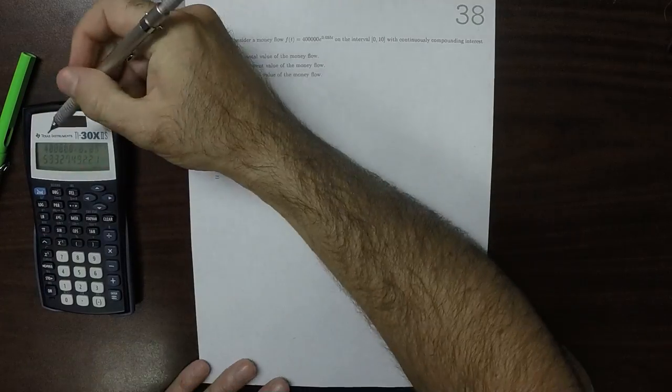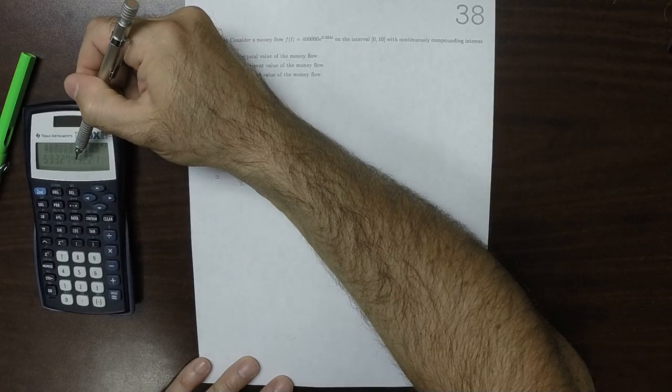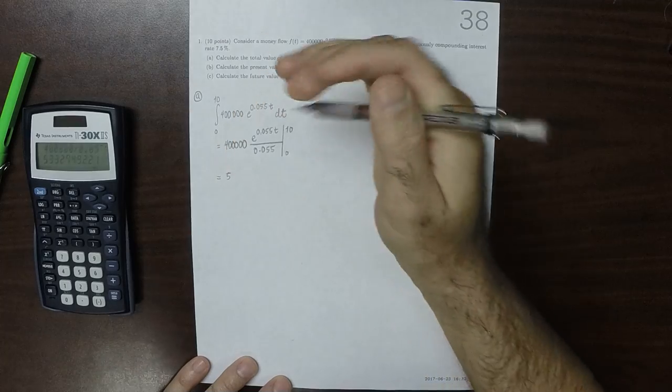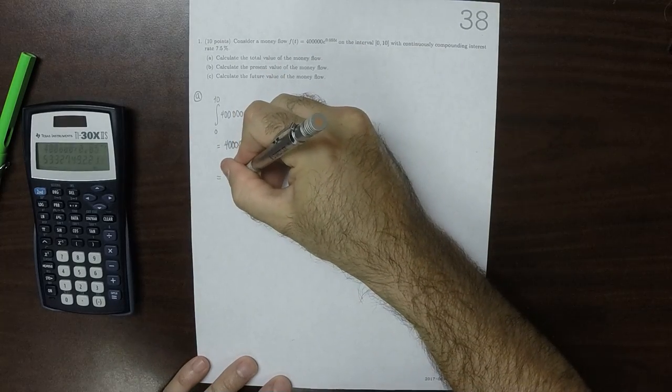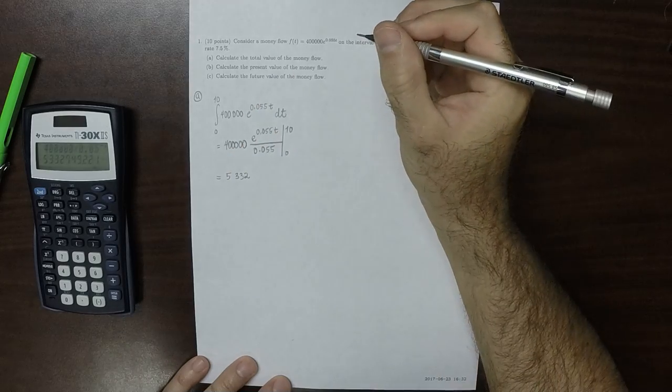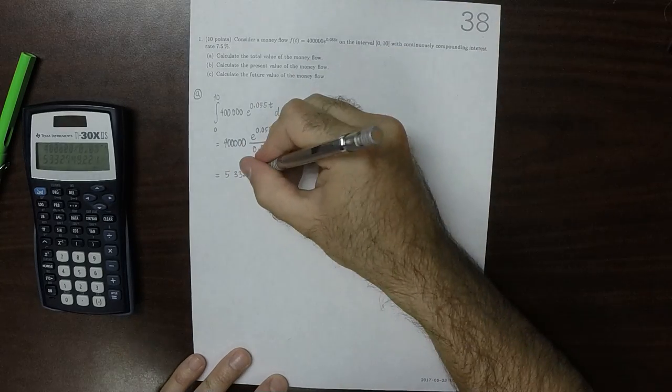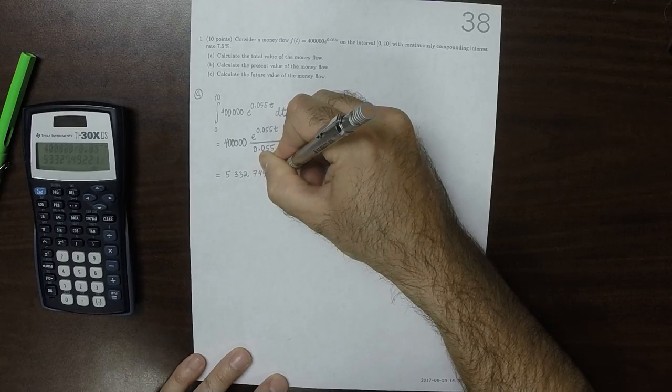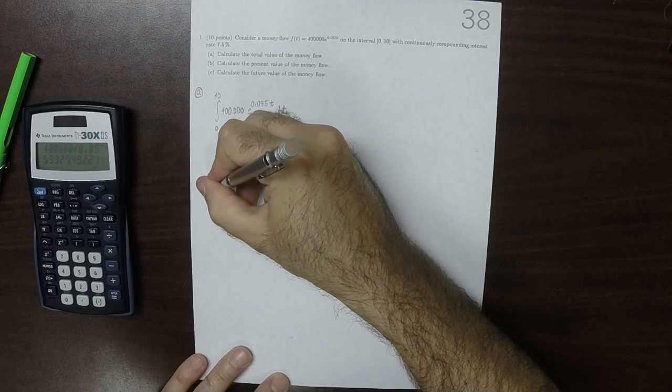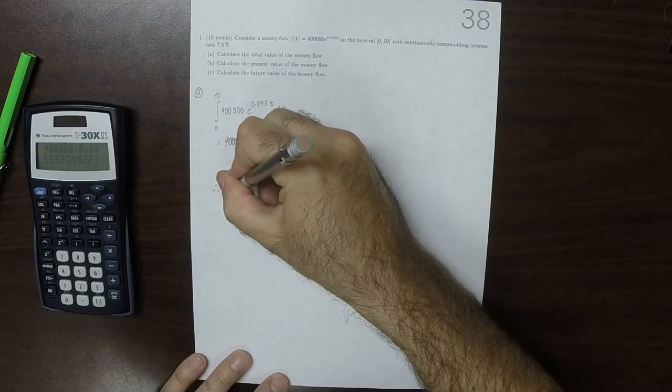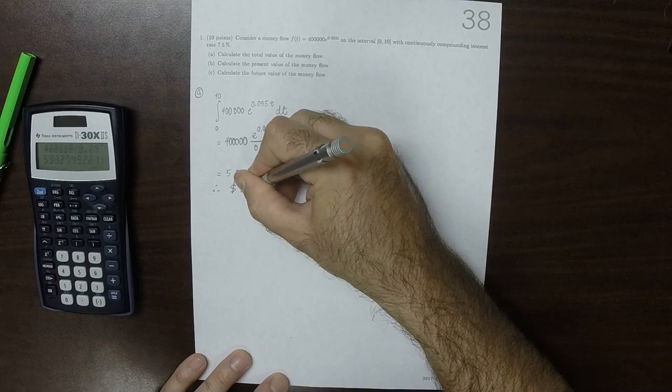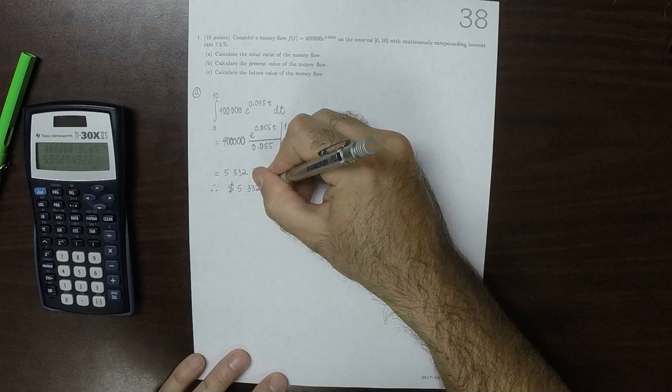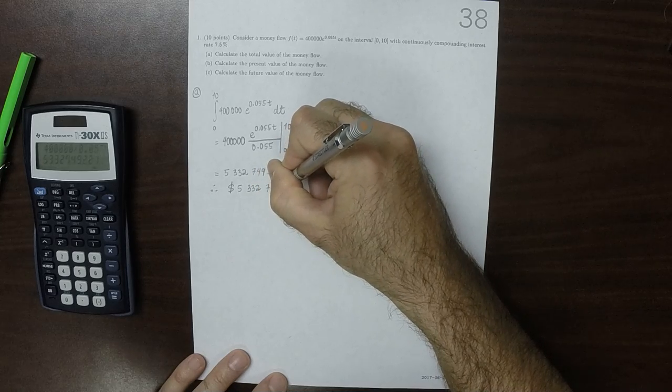So then the answer is 5,332,749.22, and therefore, rounded to the nearest cent, that's $5,332,749.22.